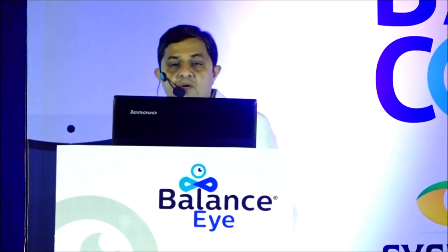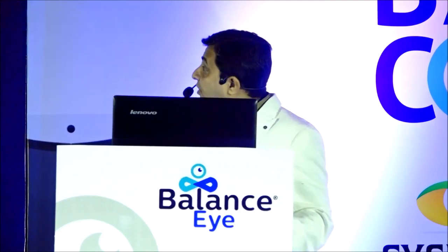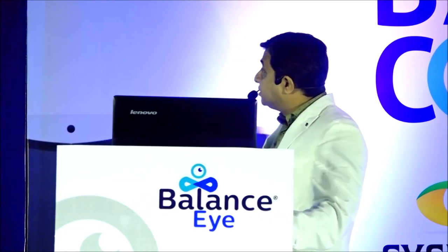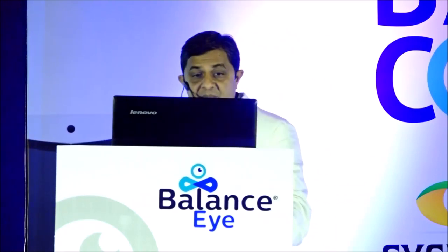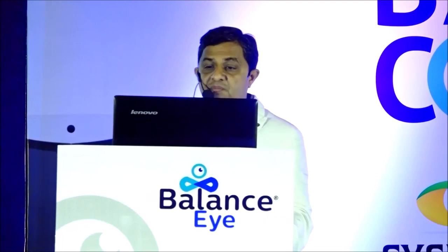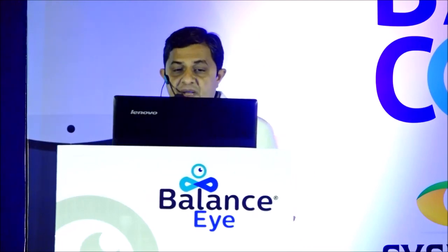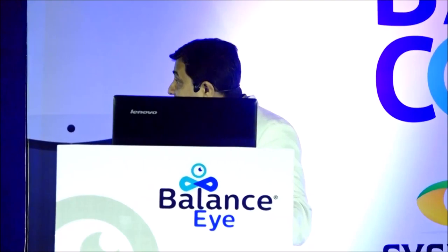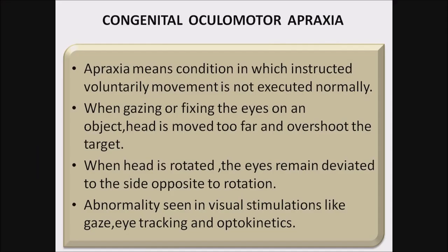Congenital oculomotor apraxia: apraxia means a condition in which instructed voluntary movement is not executed normally. When gazing or fixing eyes on an object, the head is moved too far and overshoots the target. When the head is rotated, the eyes remain deviated to the side opposite to the rotation. Abnormality is seen in visual stimulators like gaze, eye tracking, and optokinetics.